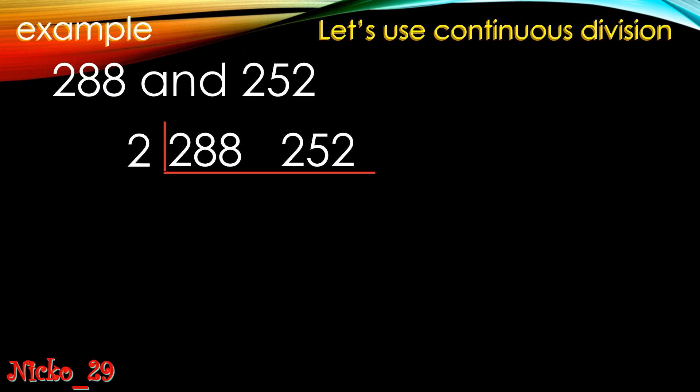Let's have another example with a larger given number to challenge ourselves more. Let's use continuous division for 288 and 252. Using the listing method here would be difficult because finding all factors of 288 is quite long. So let's use our knowledge of divisibility rules — using 2, 3, 5, or 10 — whichever is easiest.